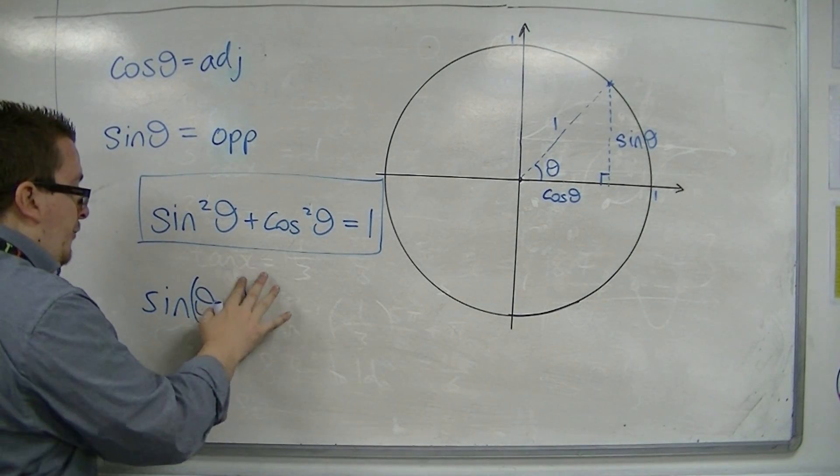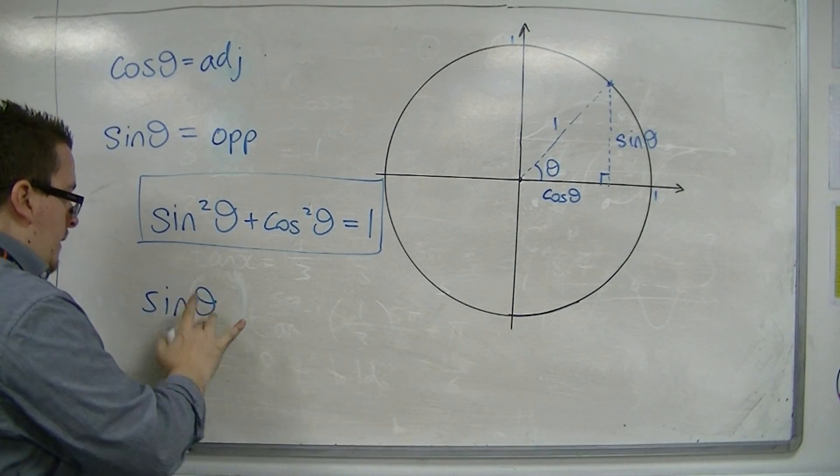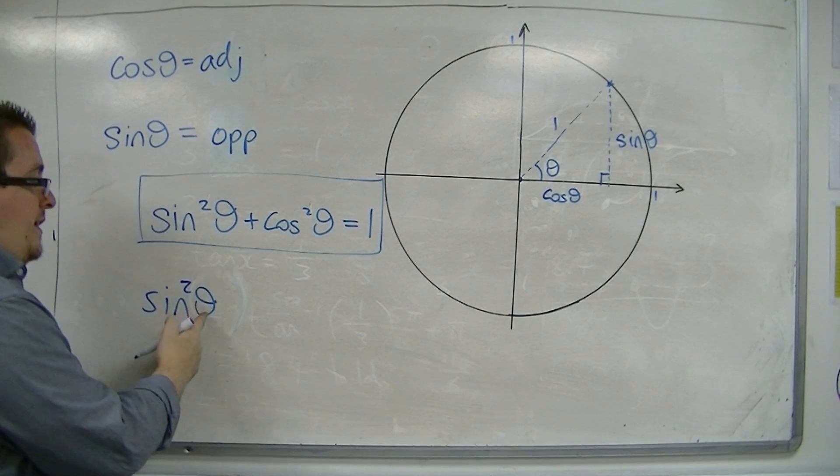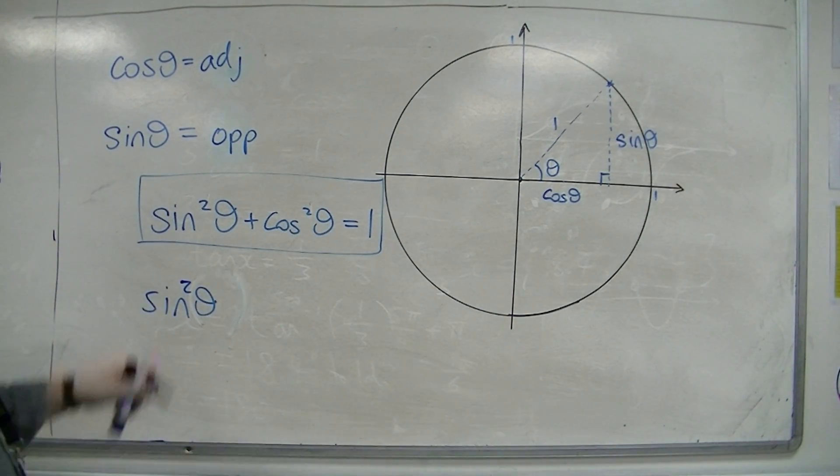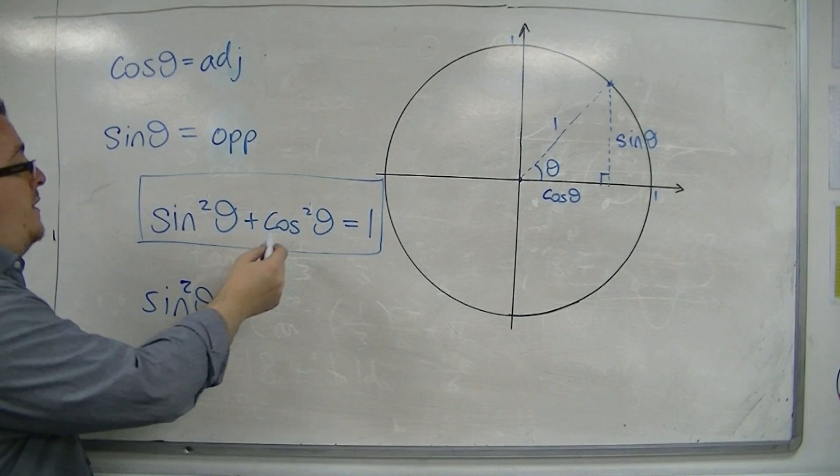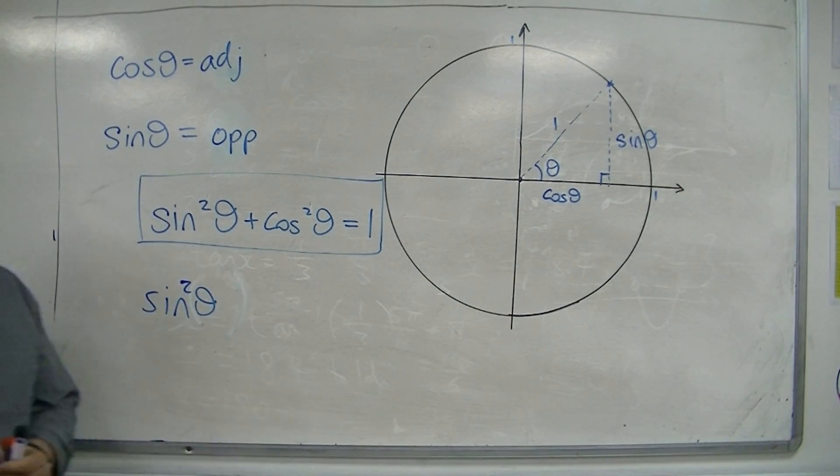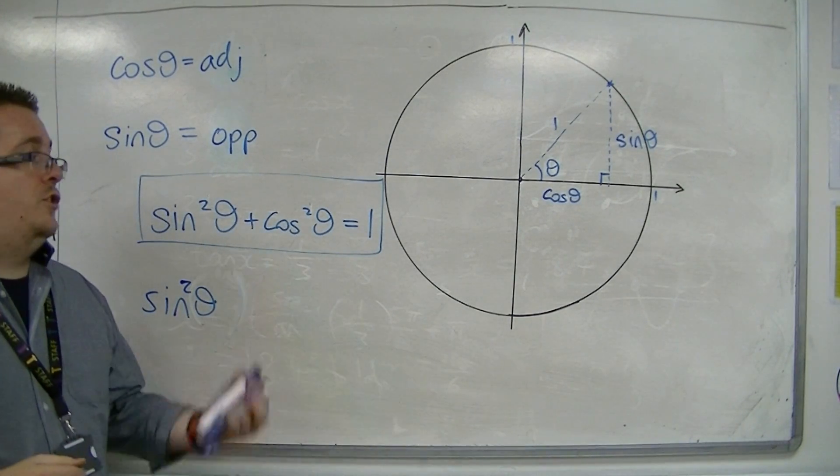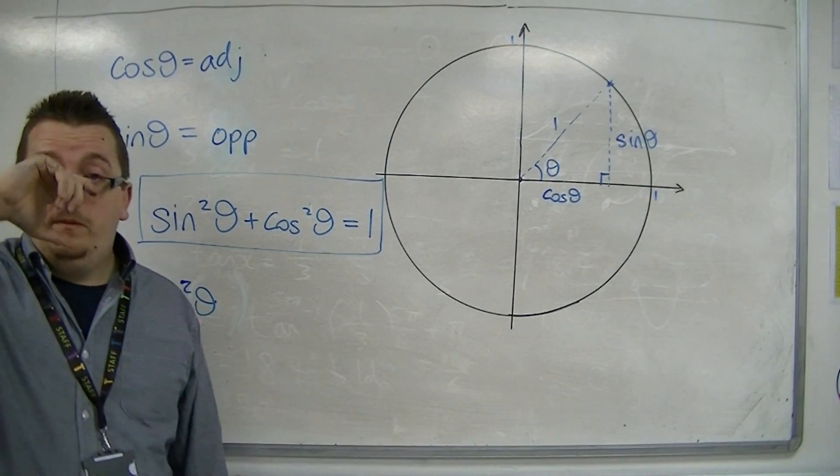So the squared gets put between the sine and the theta. So, sine squared theta plus cos squared theta equals 1. This is the trig identity that we're going to be using in the next few videos.